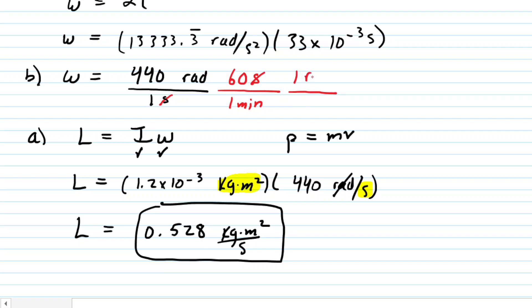One revolution is equivalent to 2 pi radians. When we multiply by that conversion factor, the radians cancel out. This leaves us with revolutions per minute. This works out to be approximately 4.2 times 10 to the power of 3, or simply 4200 revolutions per minute.